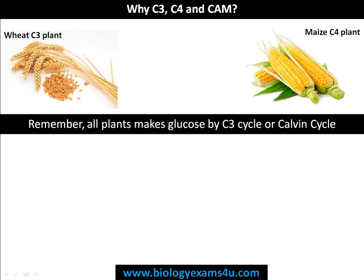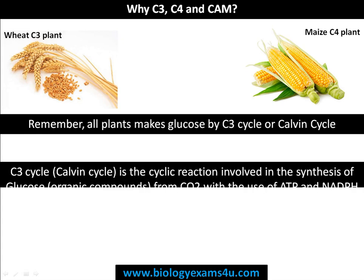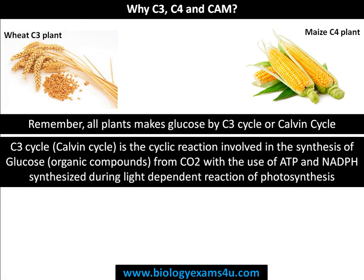C3 is a normal cycle. The most important thing to remember is all plants make glucose by C3 cycle or Calvin cycle, and it is the default cycle for the synthesis of glucose. Calvin cycle is a cyclic reaction involved in the synthesis of glucose from carbon dioxide, using ATP and NADPH synthesized during the light-dependent reaction of photosynthesis.